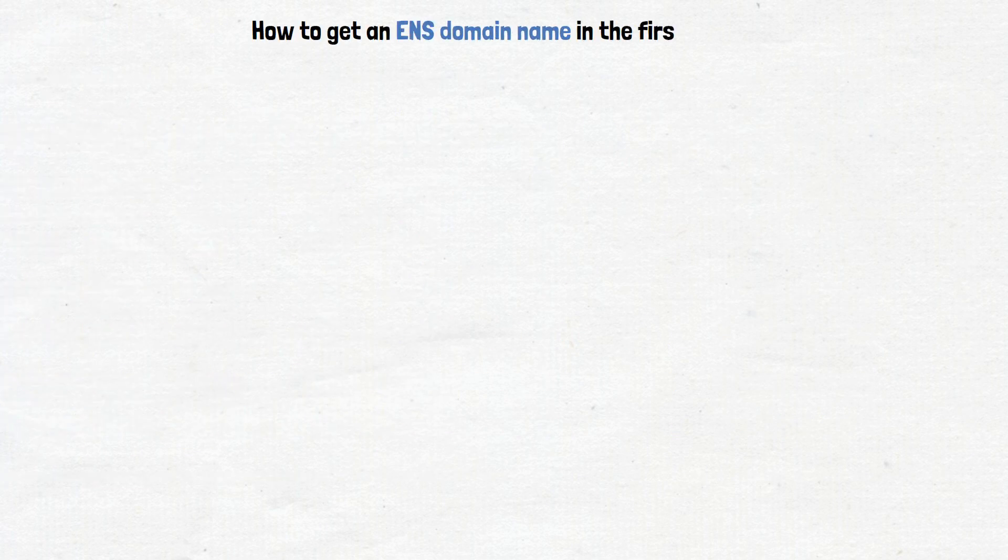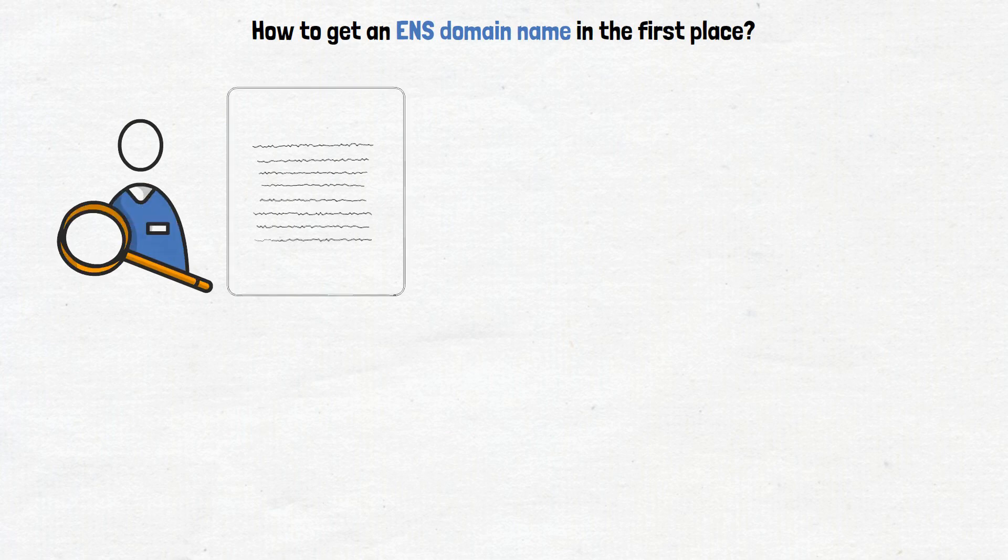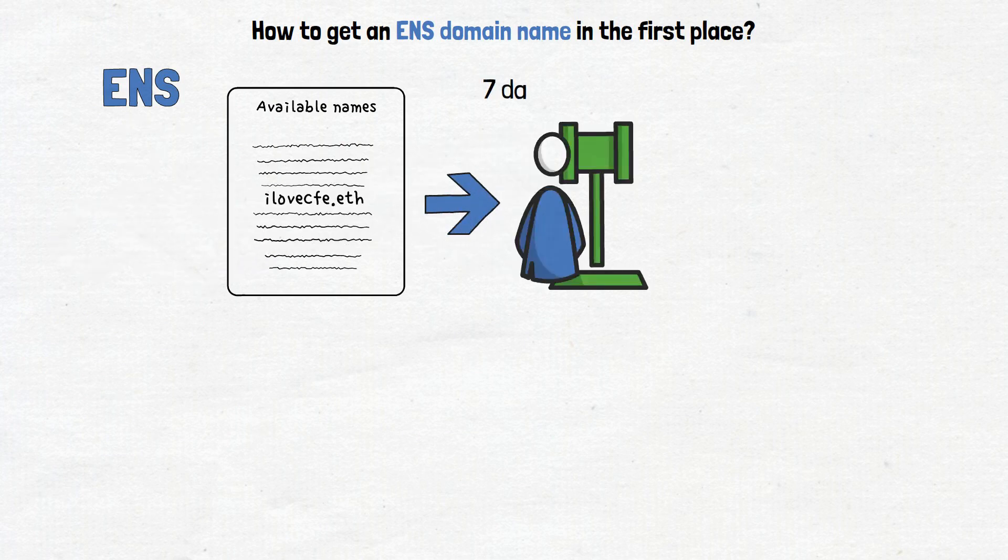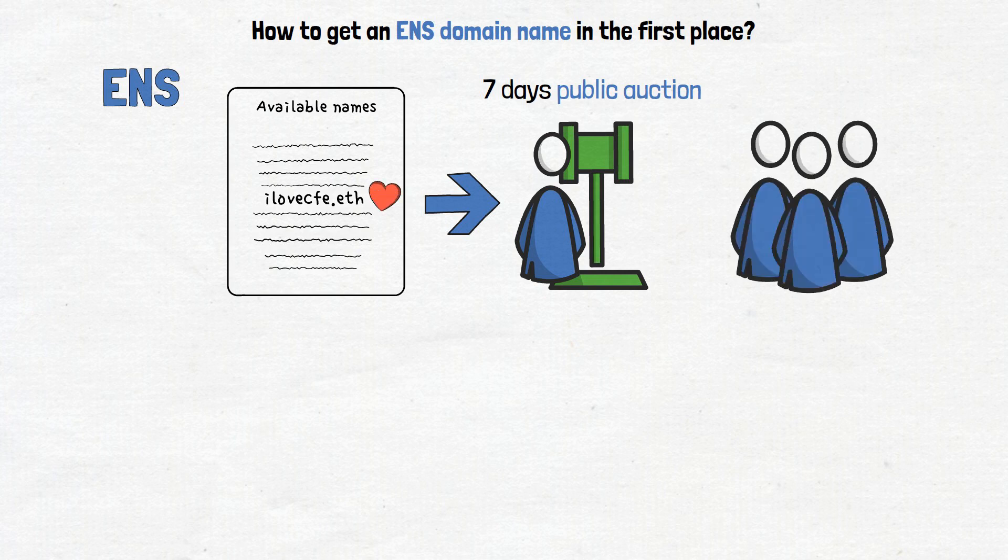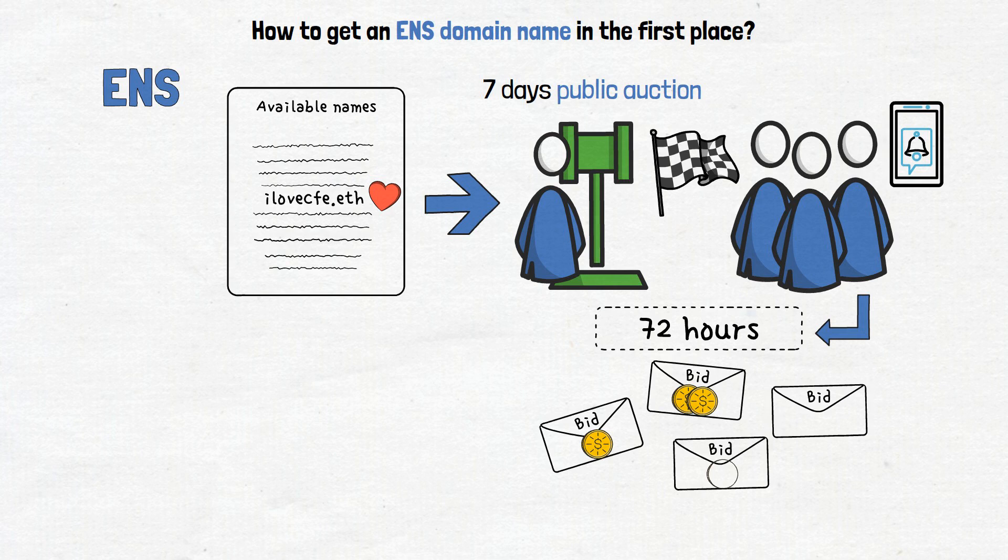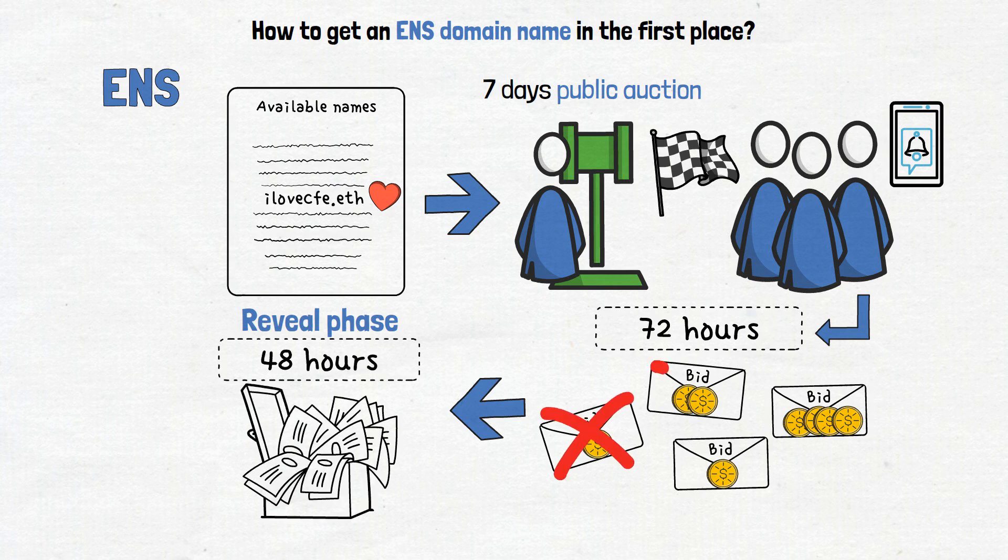So, how to get an ENS domain name in the first place? Well, first of all, users must search for available names on the ENS application. After finding the name that they like, they start a 7-day public auction for it. When the user opens a public auction, everyone who has once hearted the name immediately gets a notification about the auction. As the process opens, bidders have 72 hours to place their sealed bids with the maximum amount that they're willing to spend on the name. Afterward, the reveal phase takes effect. For the next 48 hours, bidders have to reveal their bids or risk losing submitted funds.